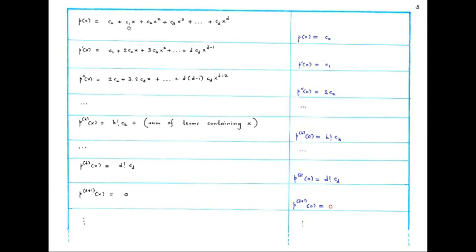If our polynomial is c₀ plus c₁x plus up to c_d x^d, then if we simply put x equal to 0 we see that p(0) is equal to c₀. So the 0th coefficient is nothing but the polynomial evaluated at 0. On the other hand, if we differentiate this polynomial then we get the constant term c₁ plus terms containing x, and again if we put x equal to 0 we see that c₁ is equal to p'(0).